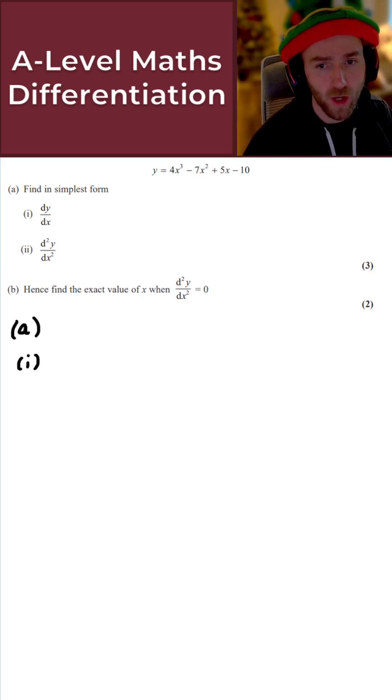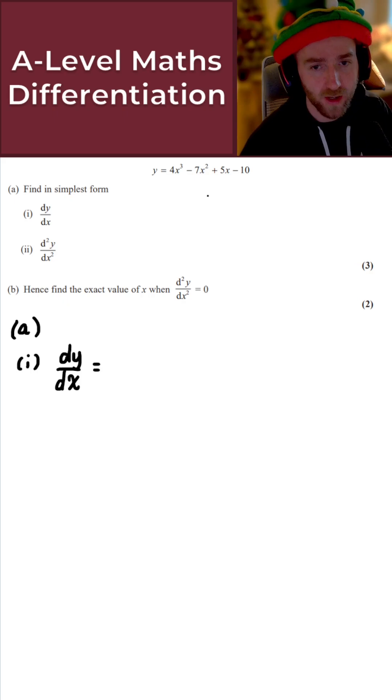Now for part 1, all we want to do here is find in its simplest form dy/dx. So we're just differentiating y with respect to x. All we simply do here is just go term by term. So 4x³, 4 times 3 is 12, reduce the power by 1, I get 12x².